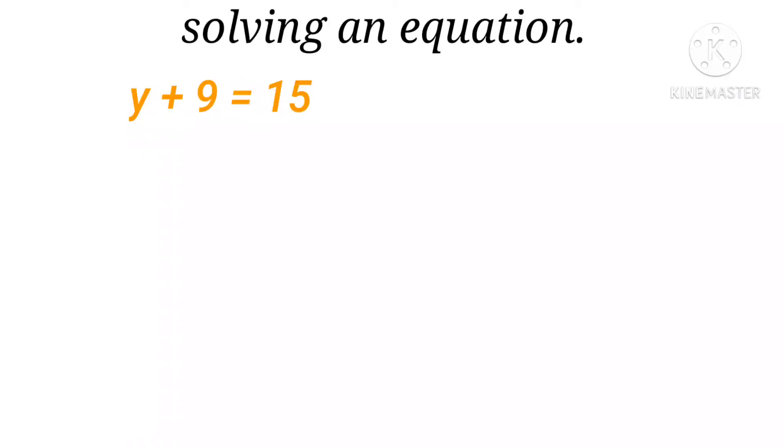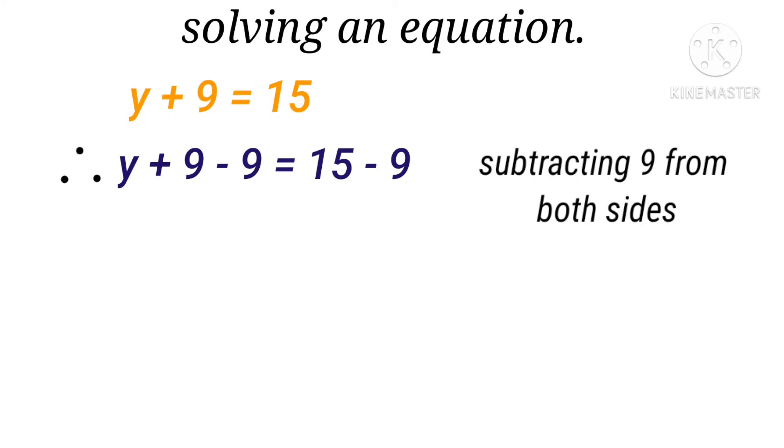Solving an equation. Y plus 9 equals 15. Second step is y plus 9 minus 9 equals 15 minus 9, subtracting 9 from both sides.